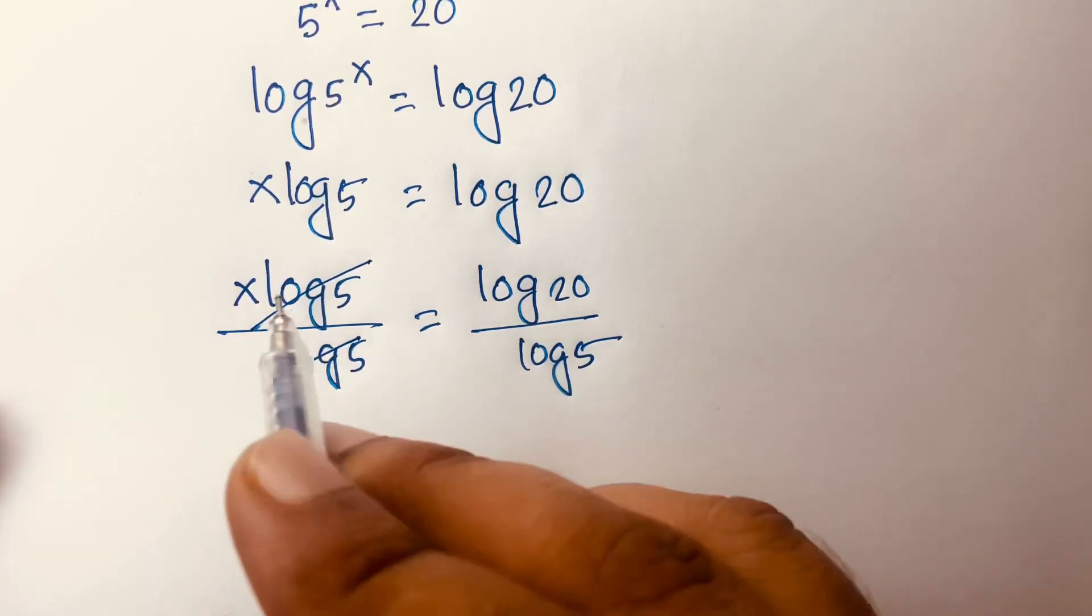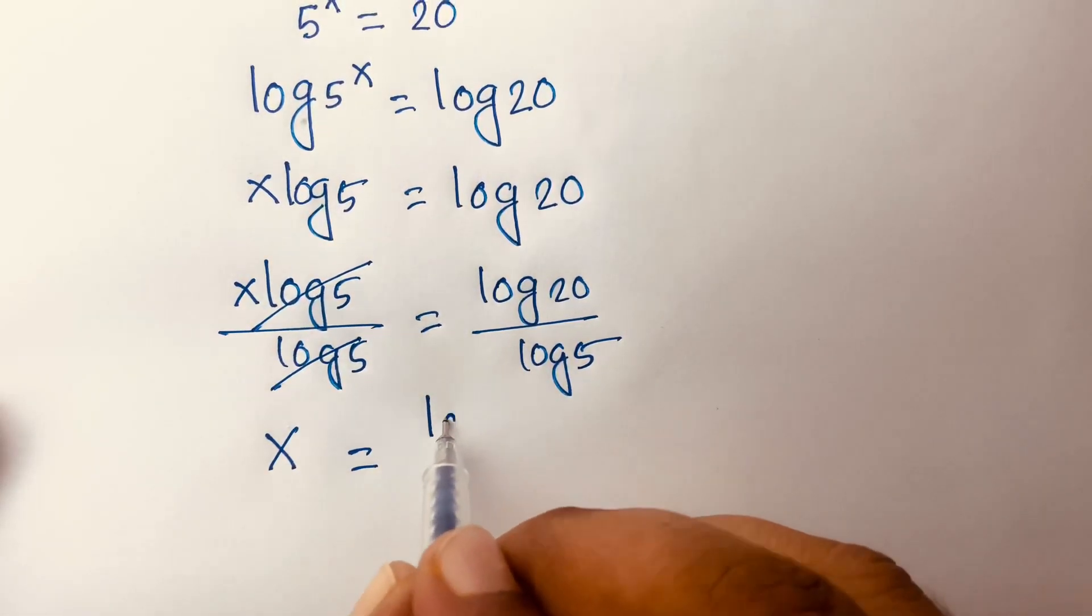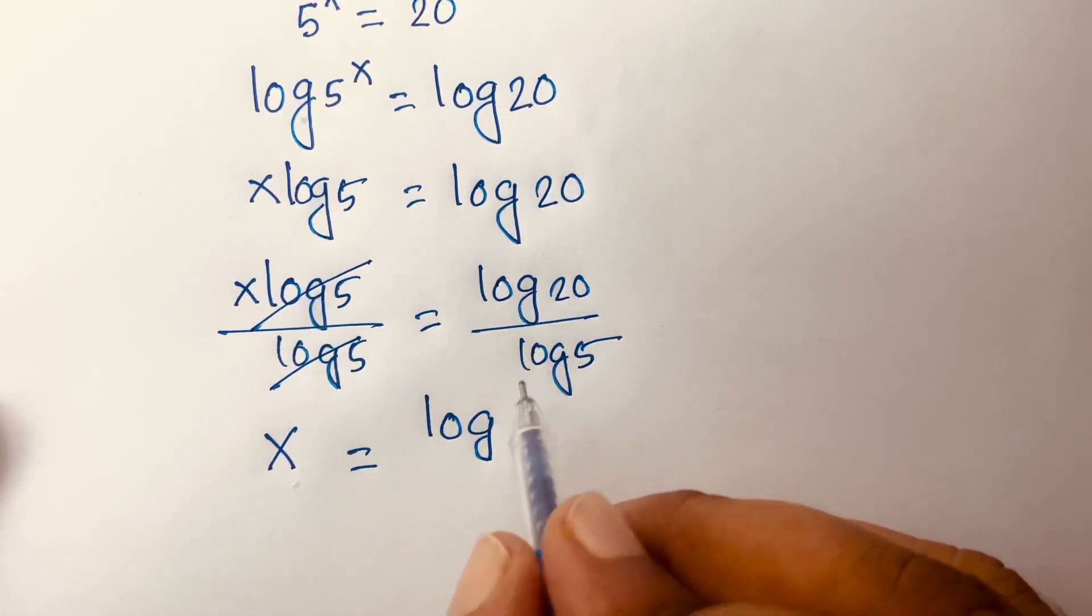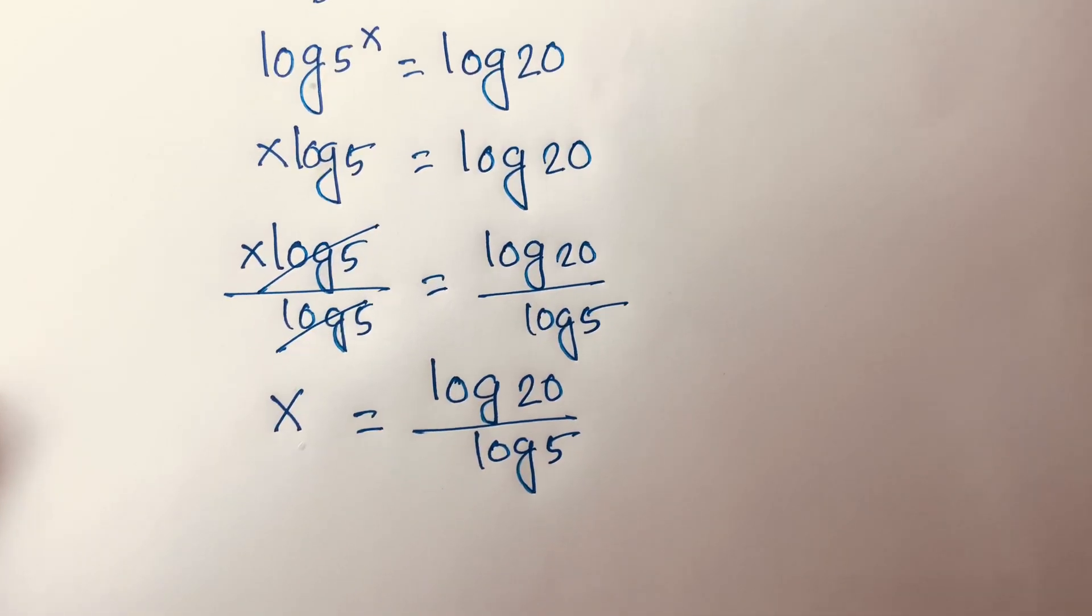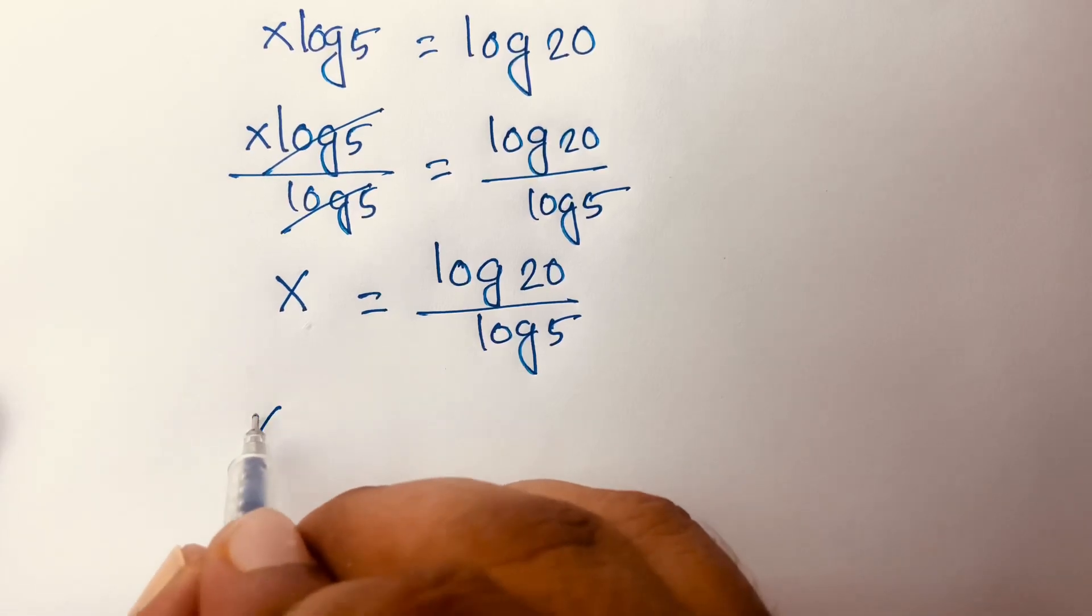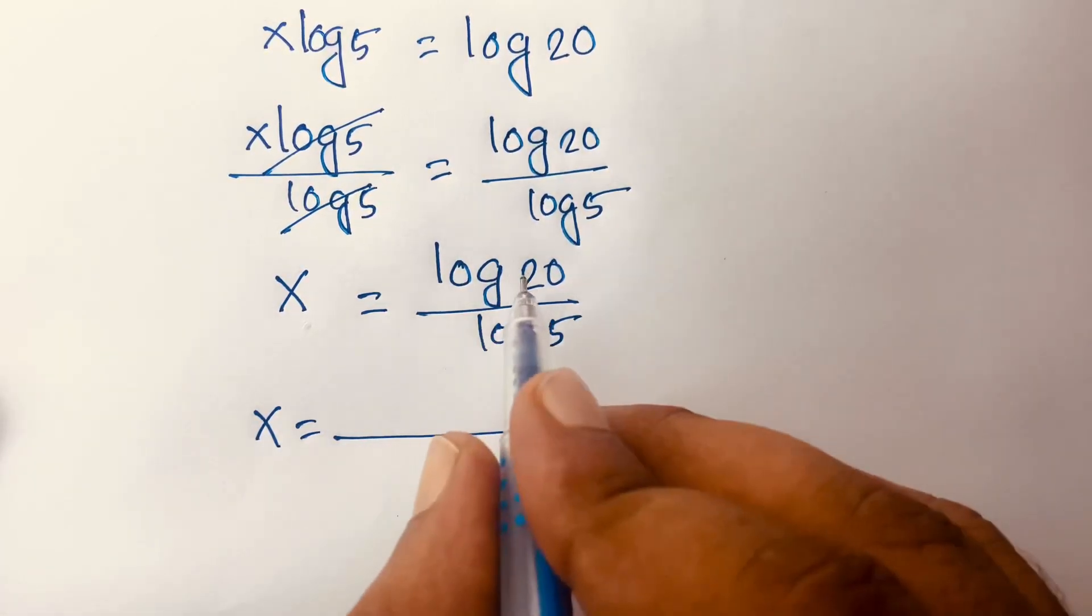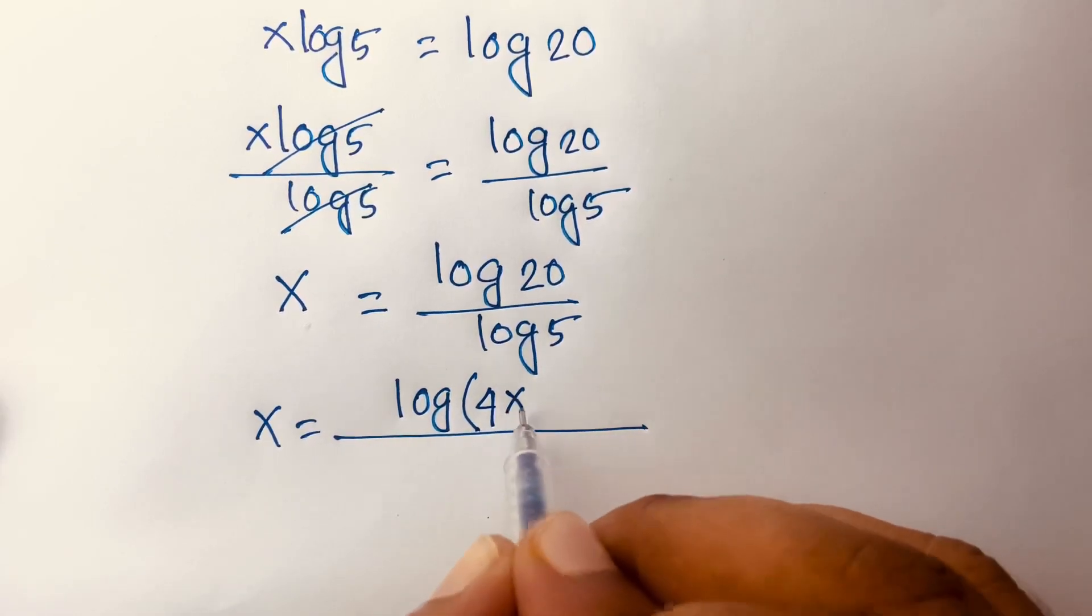We will find out here is x = log20/log5. Then I can say this equation becomes x = log(4×5)/log5.